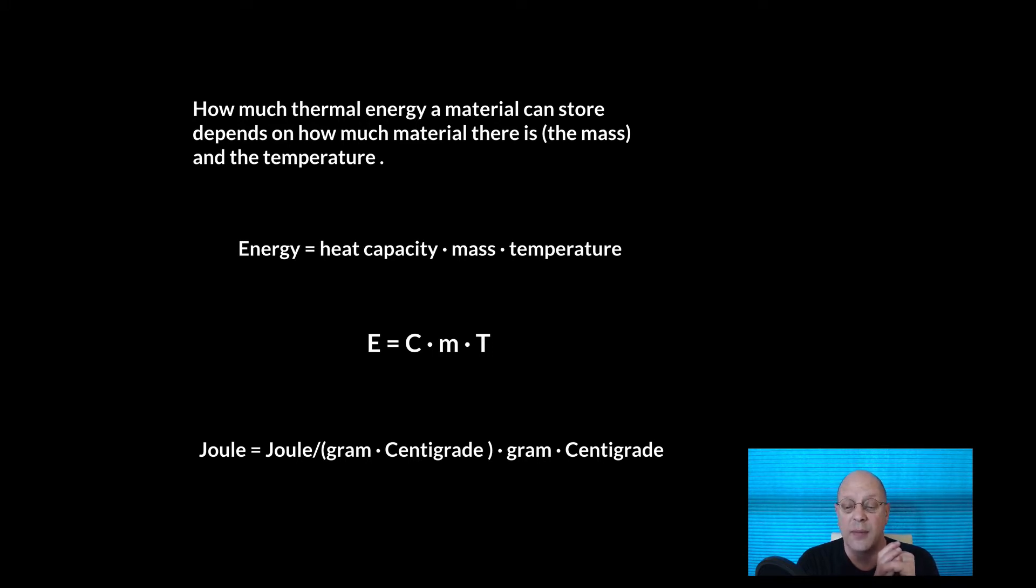So a heat capacity has units of joules per unit mass per temperature. So if we want to work in grams in the Celsius scale, then unit-wise the formula looks like it does there at the last line of the slide. So how many joules is equal to a joule per gram times centigrade, so that's in the denominator, times a gram times a centigrade. So you can see that the two grams, one in the numerator, one in the denominator, cancel, and also the centigrade. One is in the denominator, one is in the numerator, those cancel, and so you end up with a joule equal to joule, and so the units work out just right.